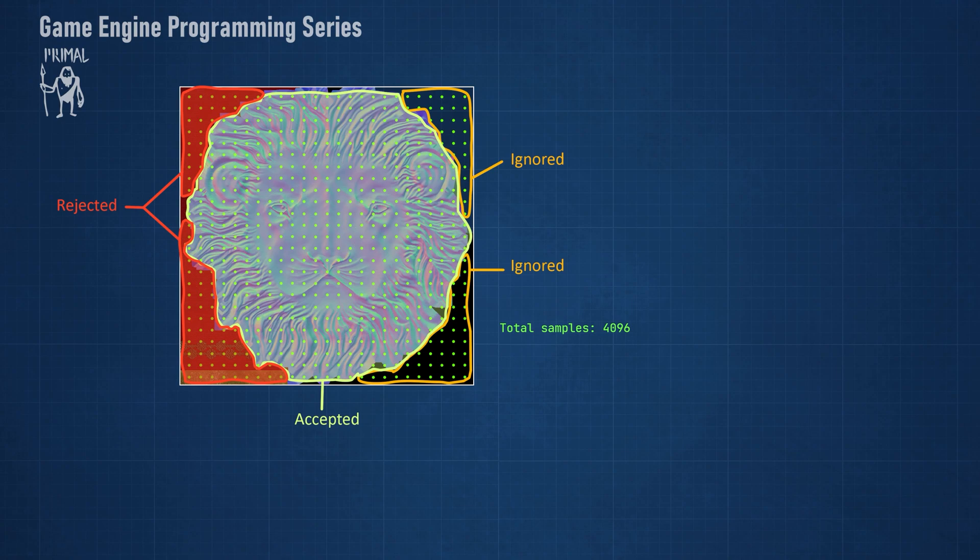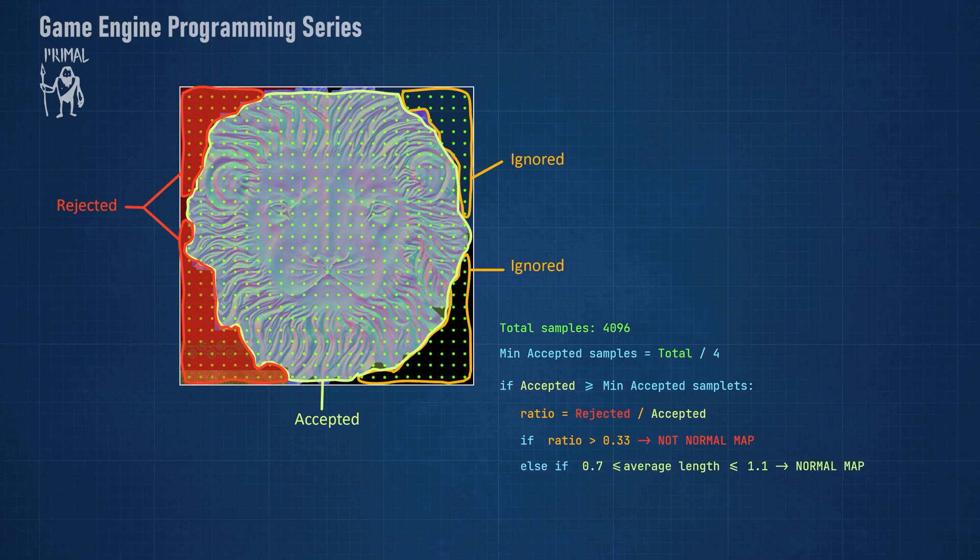After we are done sampling, we check if the number of accepted samples is high enough. For example, we can decide that at least 25% of all sampled pixels should be accepted. In that case, we can calculate the ratio of rejected versus accepted pixels. If this ratio is about some threshold, we conclude that the texture is probably not a normal map. Finally, we calculate the average length of all accepted samples and if this is within a certain range, then the texture is likely to be a normal map.